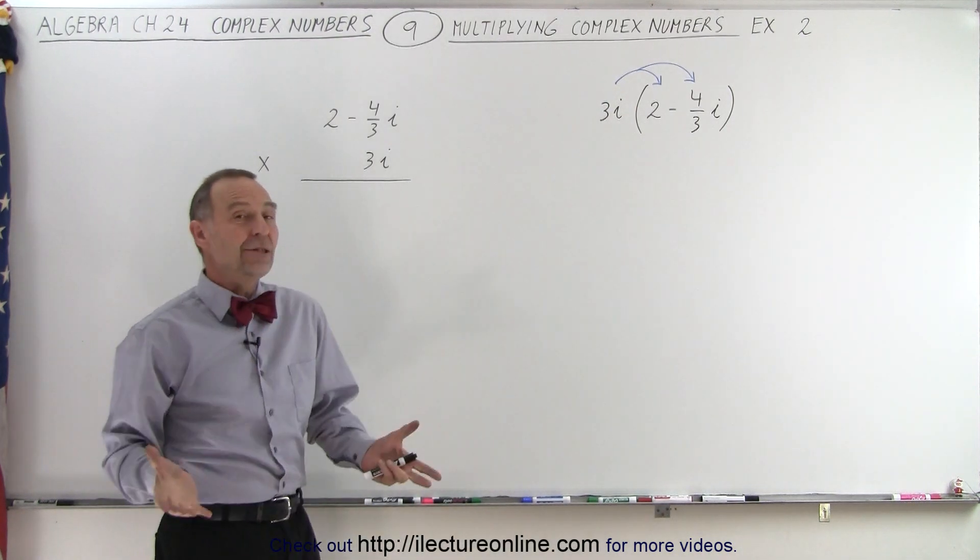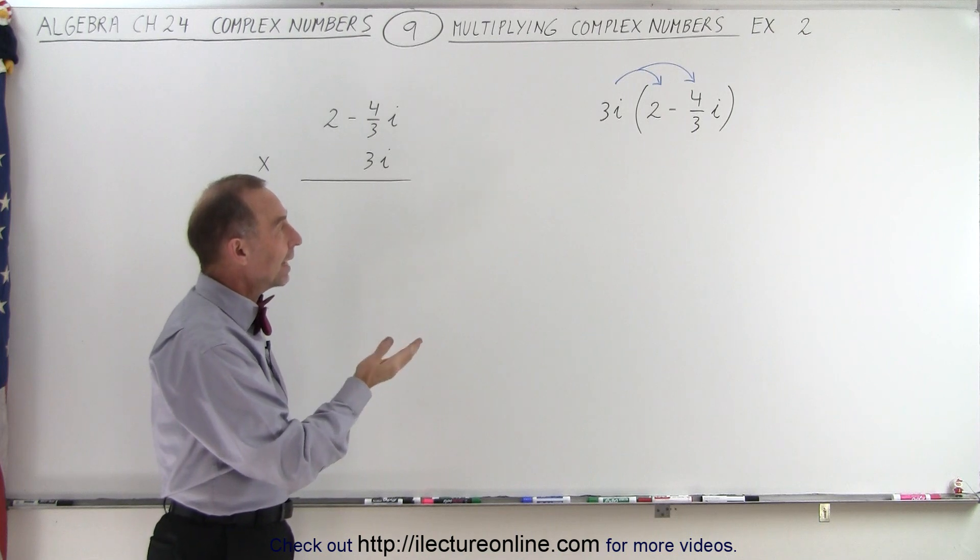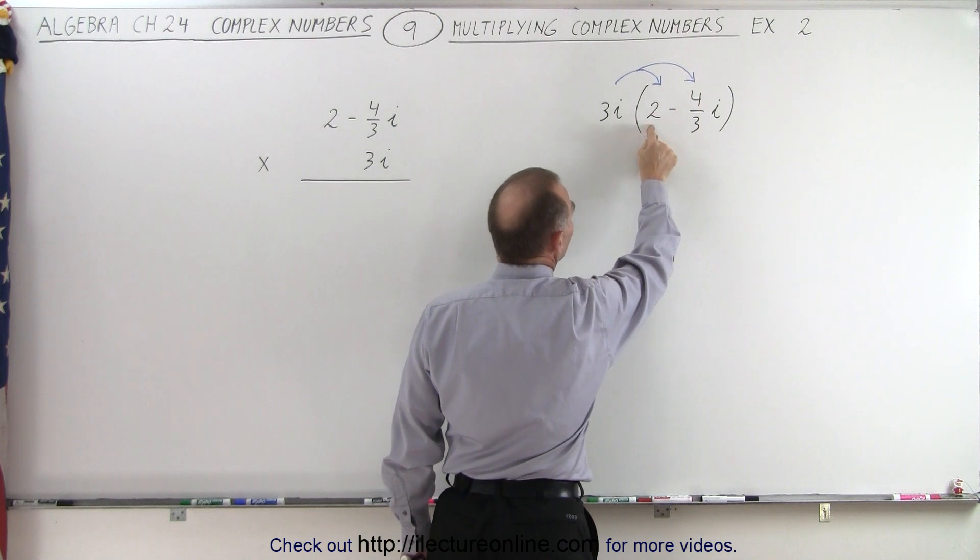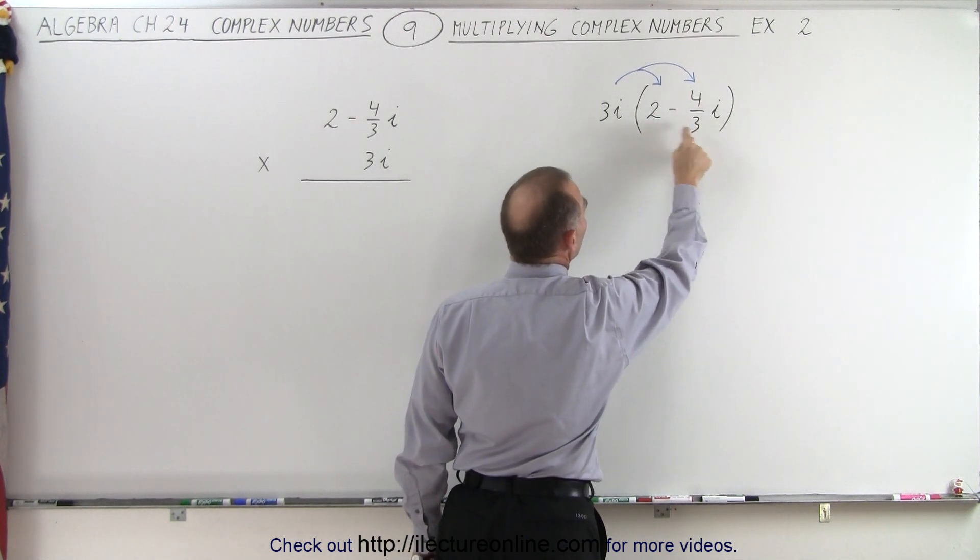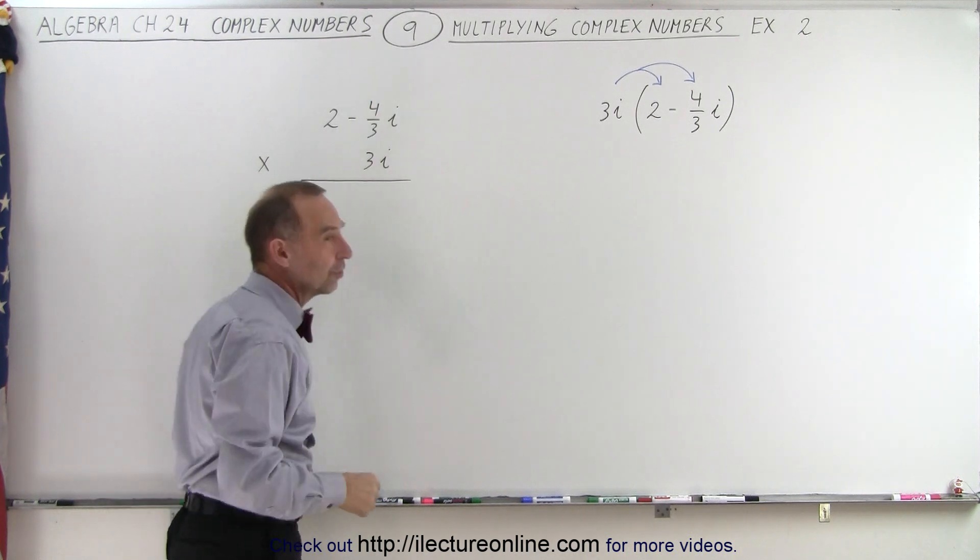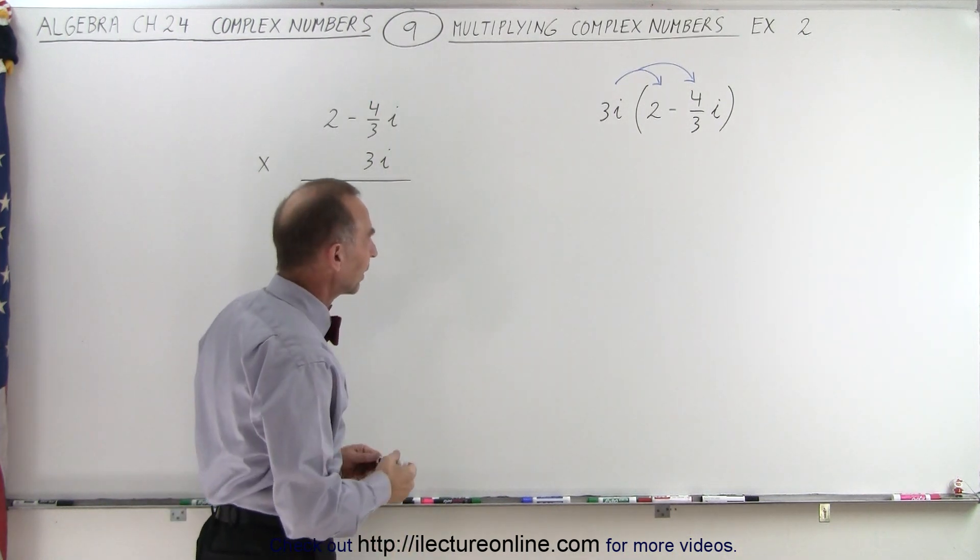But we still need to know how to do that. And again, the approach can be to take the imaginary number and multiply times each of the two terms, or the two parts of the complex number, or we can do it in a vertical sense. So we'll do it both ways and see what that looks like.